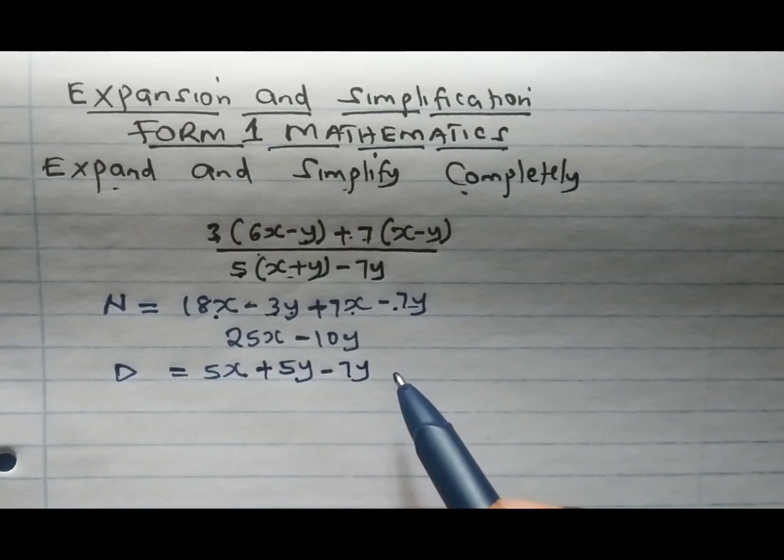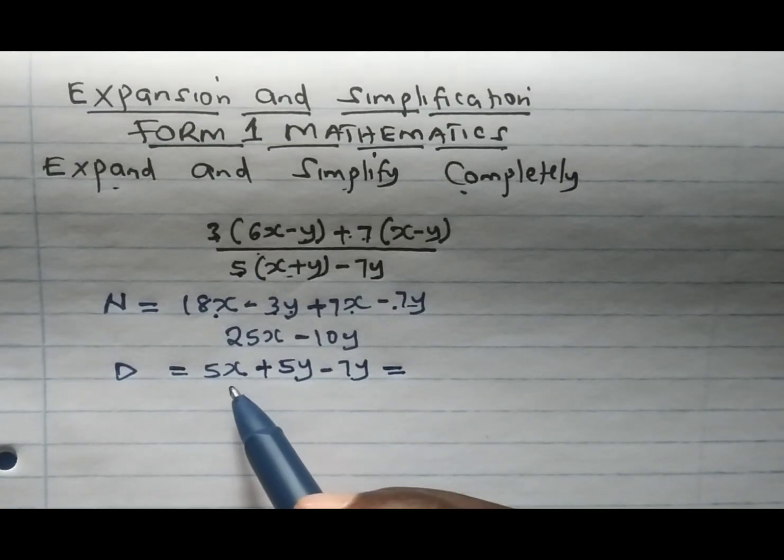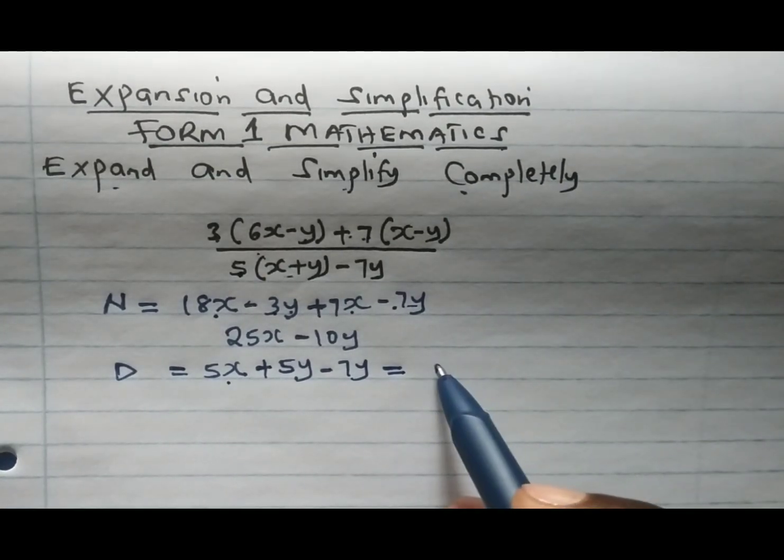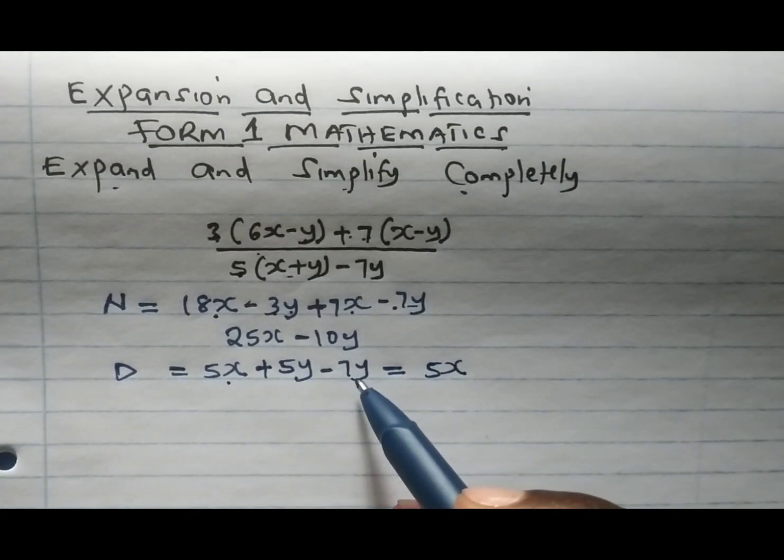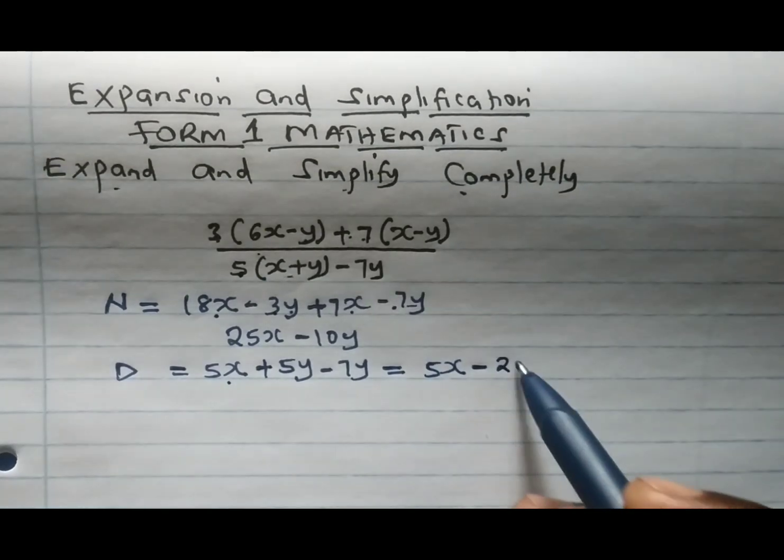This gives us 5x, then 5y minus 7y gives minus 2y.